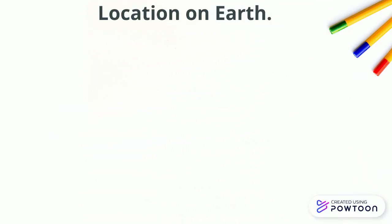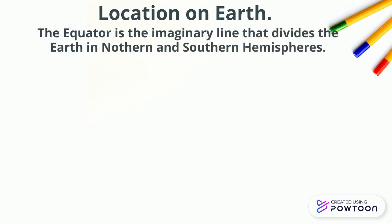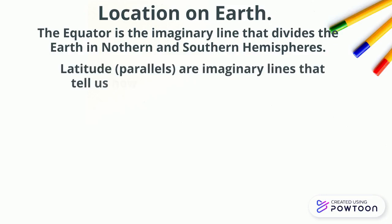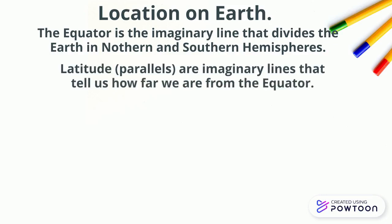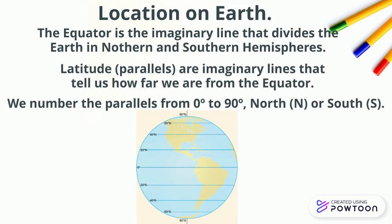Location on Earth. The equator is the imaginary line that divides the Earth into northern and southern hemispheres. Latitude, or parallels, are imaginary lines that tell us how far we are from the equator. We number the parallels from 0 degrees to 90 degrees north or south. And here you are a picture of the Earth with the parallels.